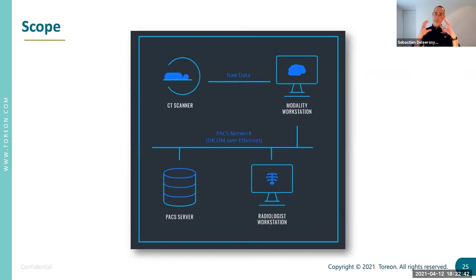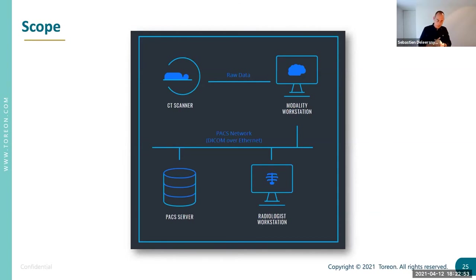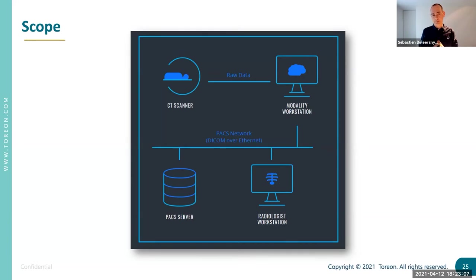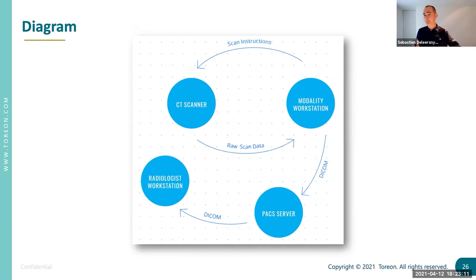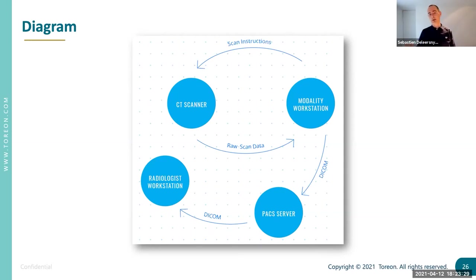Taking the key aspect here: the CT scanner forwards raw data to a modality workstation — the workstation used by operators to capture data from the scanner itself and then forward it to the PACS server. The radiologist typically has their own workstation as well. This is all ethernet-connected locally. In diagram form, the scanner gets scan instructions from the modality workstation, forwards raw scanning data to the workstation, which then forwards using DICOM as a protocol to the PACS server. The radiologist uses their workstation via DICOM to access the PACS server.